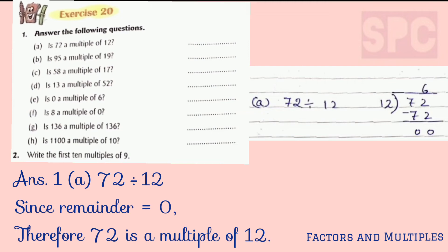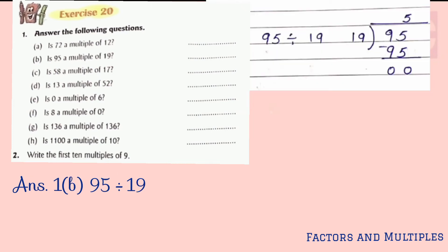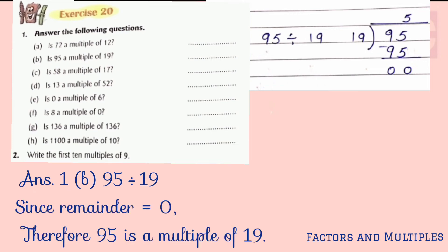It means 72 is a multiple of 12 — correct, so we write yes. For part b, when you divide 95 by 19, you will get 0 in the remainder — 19 fives are 95 — so 95 is a multiple of 19.